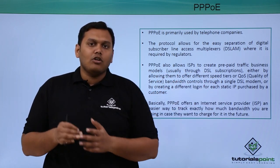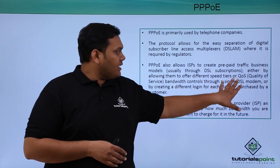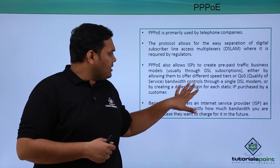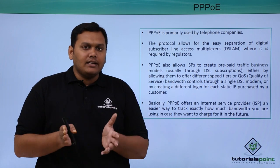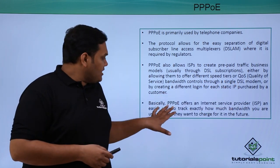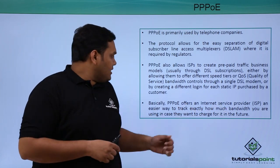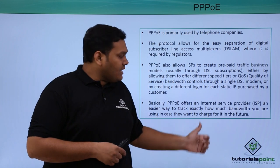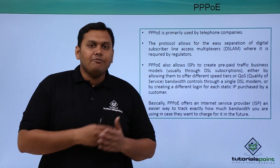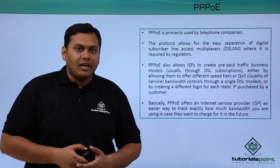The DSLAM plays a key regulatory role, allowing ISPs to offer different speed tiers based on quality of service and bandwidth controls through a single DSL connection. This gives ISPs an easier way to track exactly how much bandwidth is used, and fair usage plans are categorized based on the DSLAM regulator.